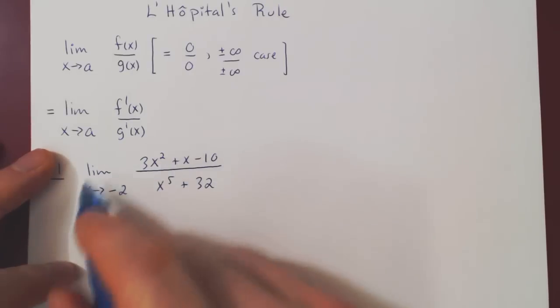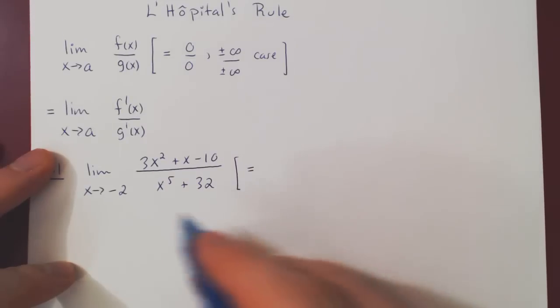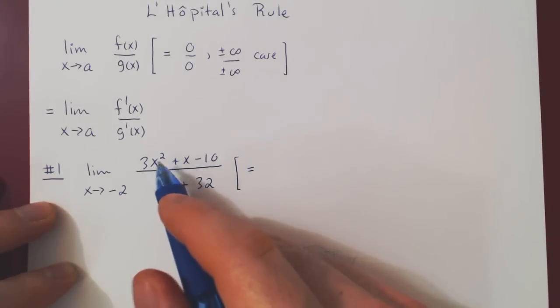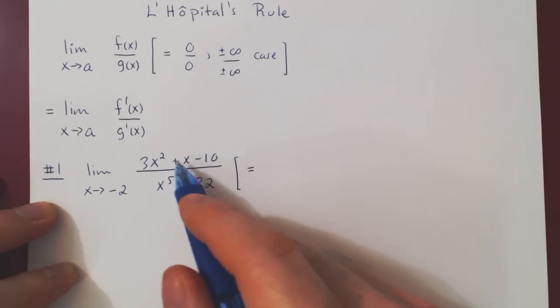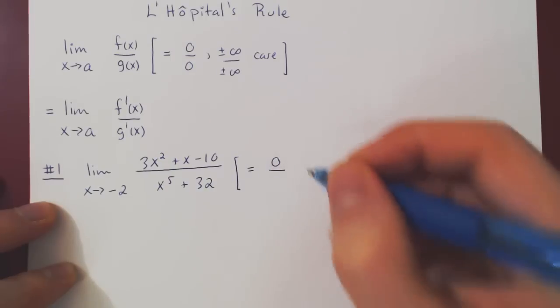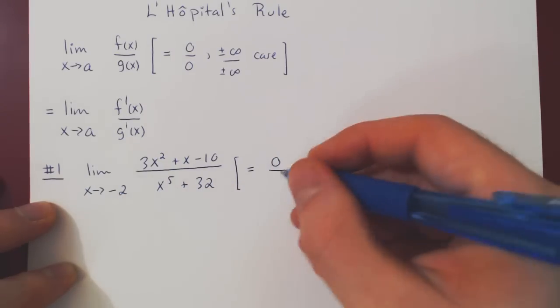As always, when we consider a limit, we look at what kind of case we're dealing with. So as x approaches negative 2, if we square, we get 4 times 3 is 12, plus negative 2 is 10, minus 10 is 0, over negative 2 to the 5 is negative 32, plus 32 is 0.